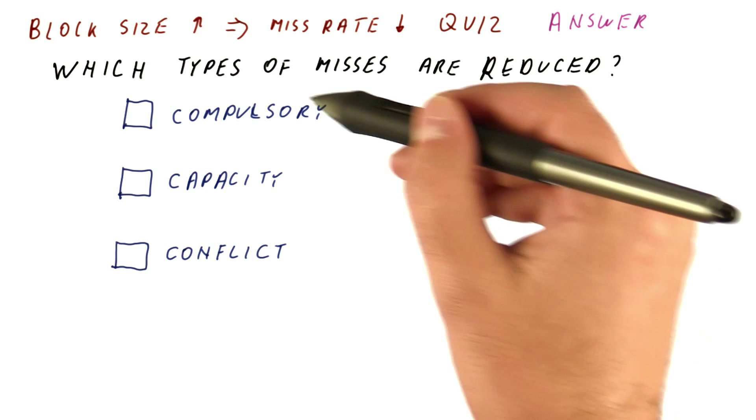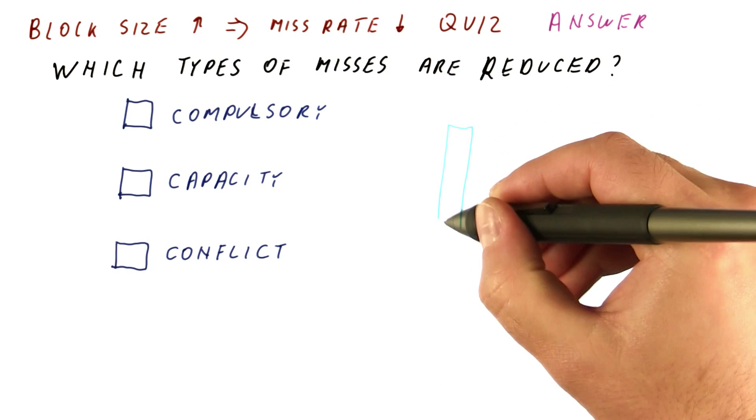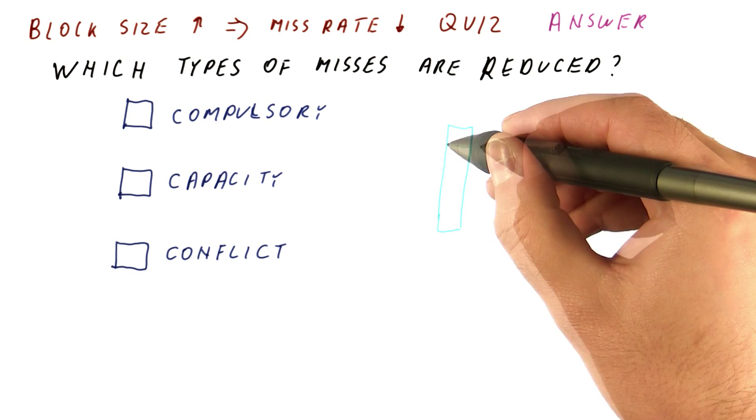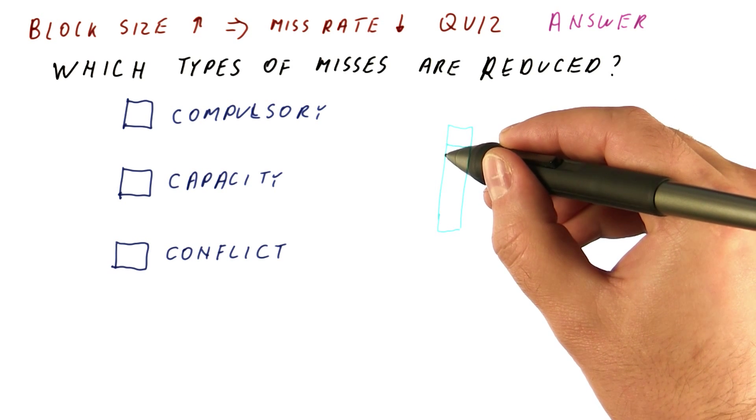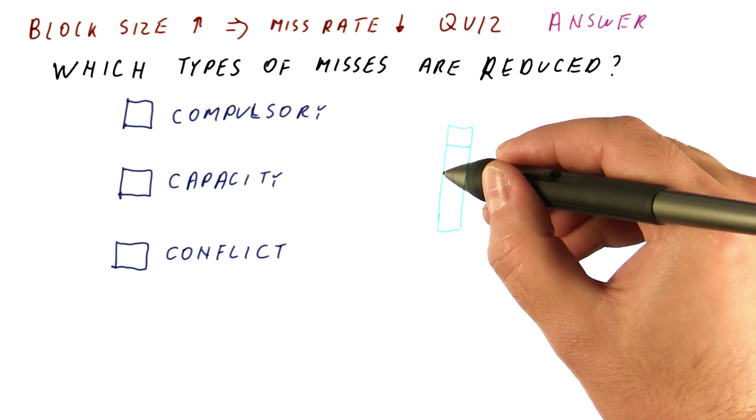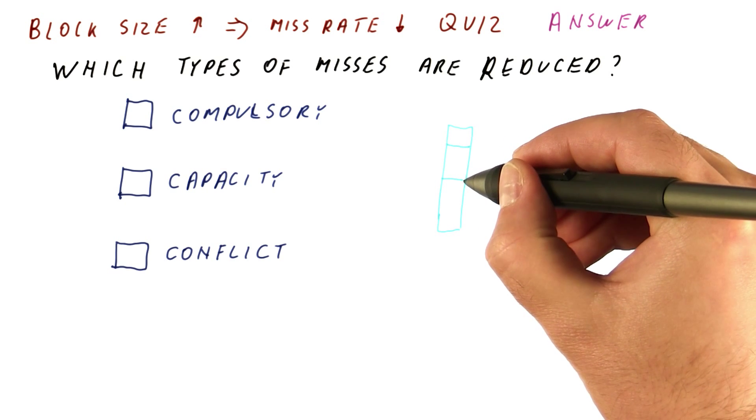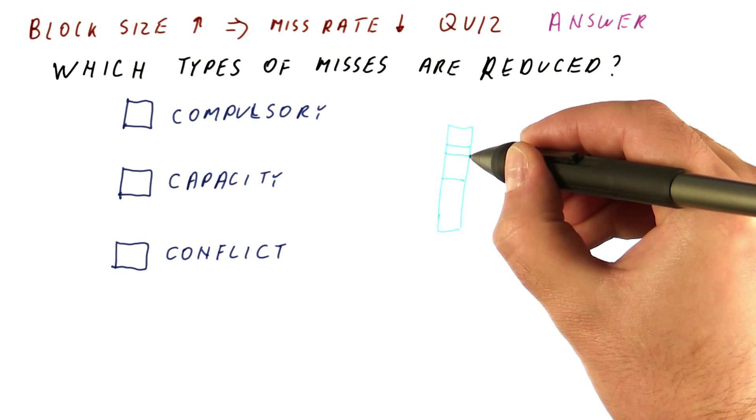Let's first look at the compulsory misses. If we have a small block size, and this is our memory, we'll bring in this block and suffer a miss for the first time. We bring in another block and suffer a miss. Now let's say we bring in this block and suffer a miss.